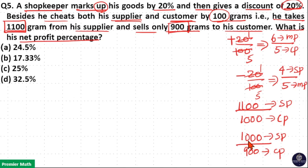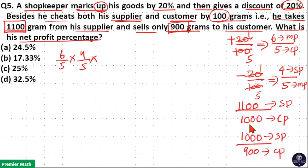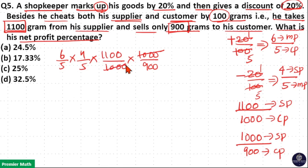In both cases he is making profit. So multiply all four ratios together: 6 by 5 into 4 by 5 into 1100 by 1000 into 1000 by 900. The two 1000s cancel, then 3 goes 2 times in 6 and 3 goes 3 times in 9. So we get 2 into 4 into 1100 = 8 into 1100 = 8800 in the numerator, and 5 into 5 = 25 into 3 = 75 in the denominator.